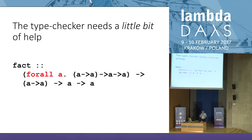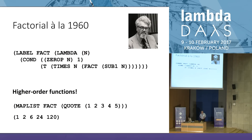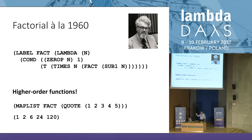Back in the 40s, Church could write functional programs but couldn't run them. That wasn't possible until about 1960, when John McCarthy implemented Lisp — it was really exciting; at last you could run functional programs. There's the factorial function in Lisp. Right from the start, Lisp lets you treat functions as data, so you had a map function — called maplist in Lisp. You could map the factorial function over the list 1, 2, 3, 4, 5 and get the list of factorials. Functional programming was starting to arrive in the form we know it today.